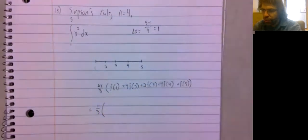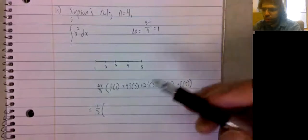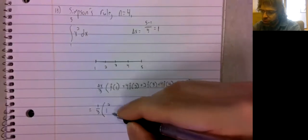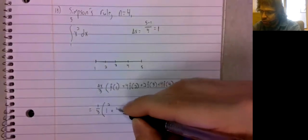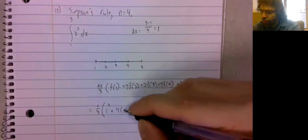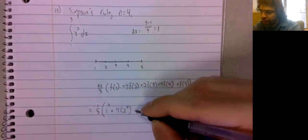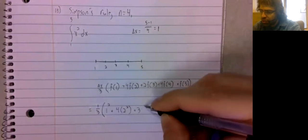So one third, f of one, one squared, plus four, times two squared, plus two.